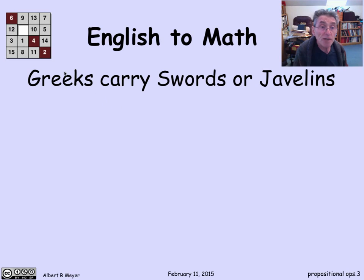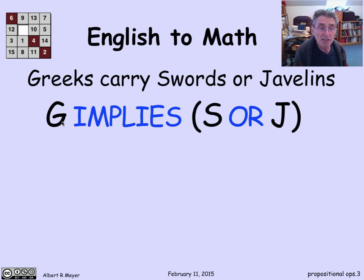Let's look at this example. Greeks carry swords or javelins. And if I was transcribing this into precise math notation, I could say G for Greeks implies S for swords or J for javelins. So this is an assertion that if you're Greek, then you carry a sword or a javelin. That's how we're going to translate this sentence into just using these operators.